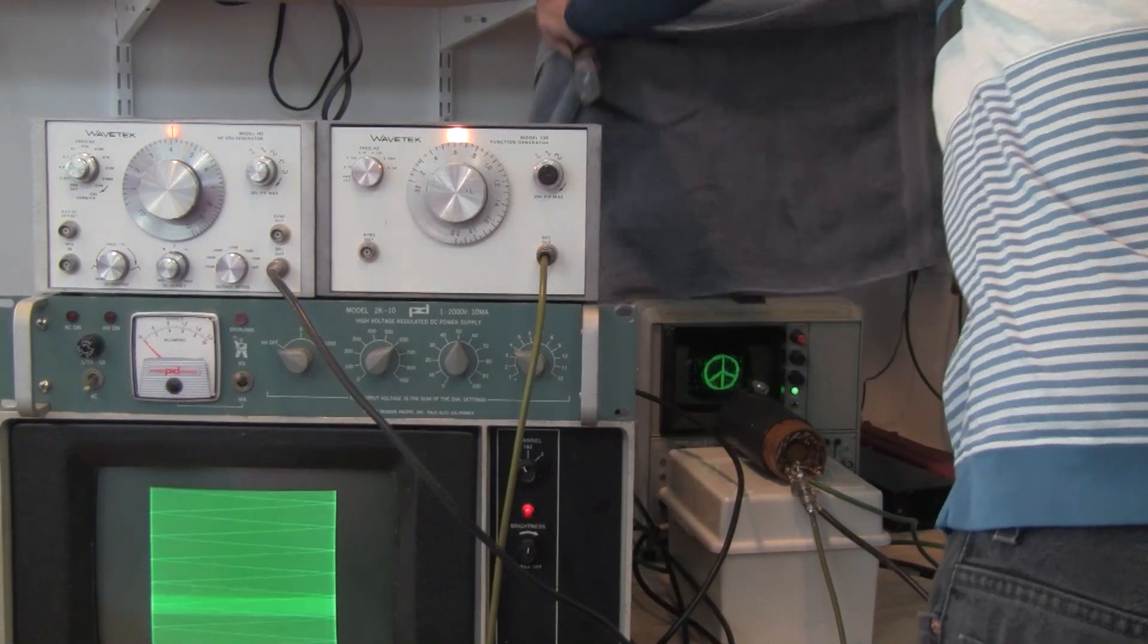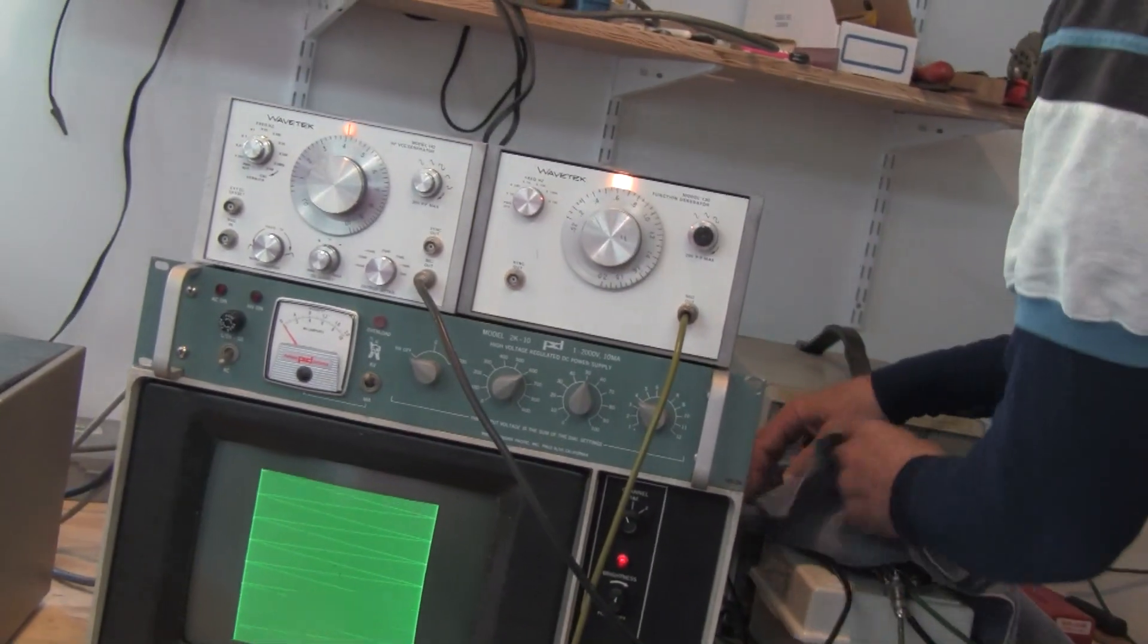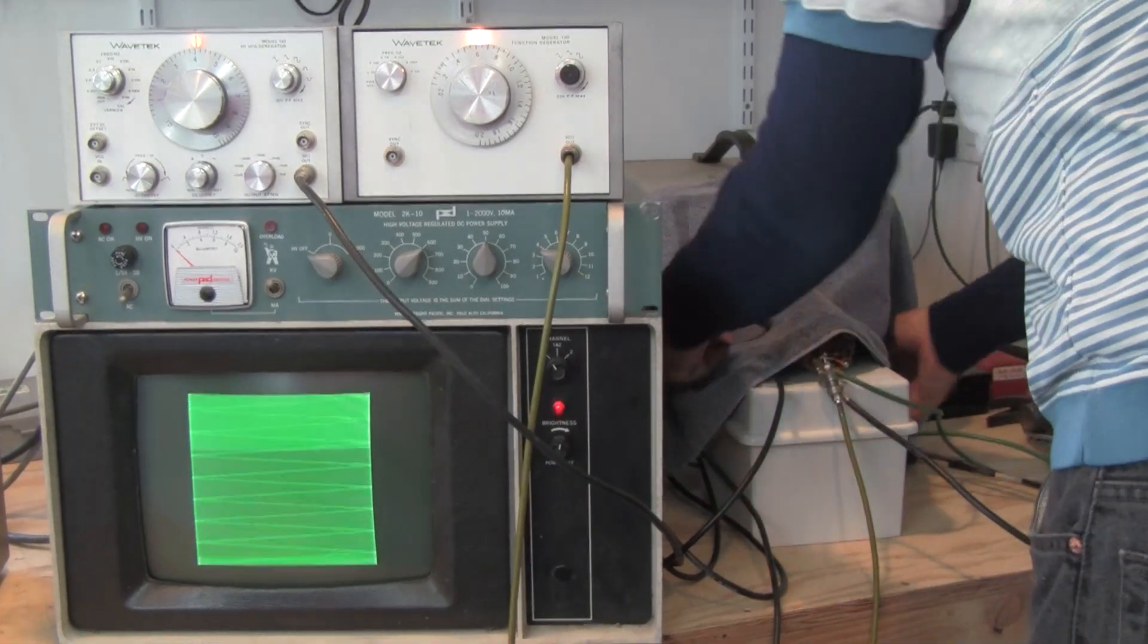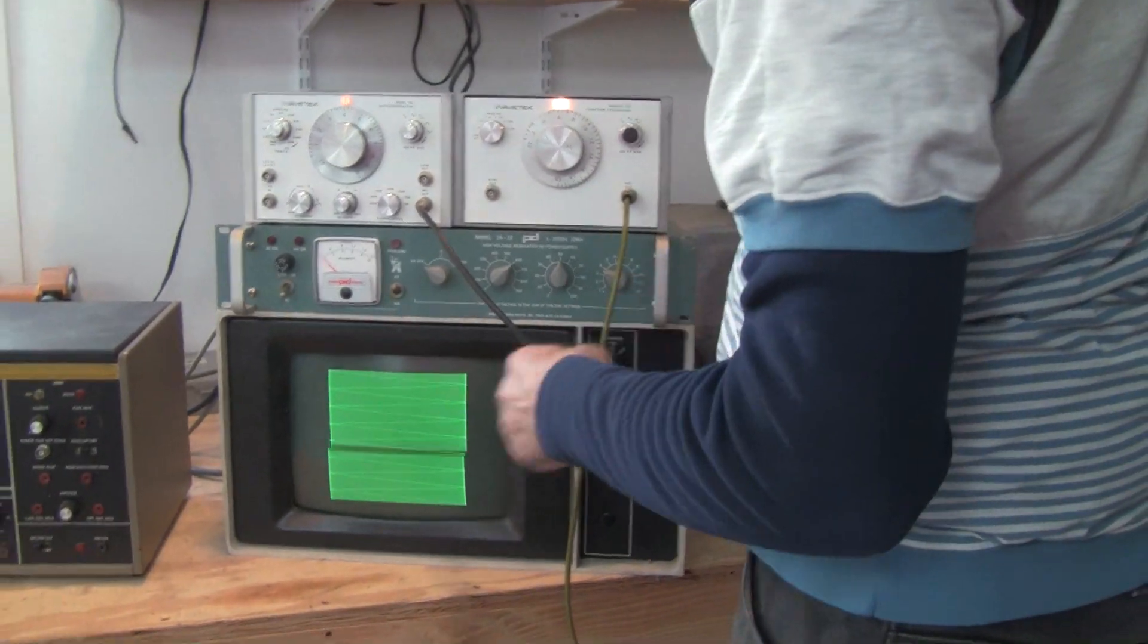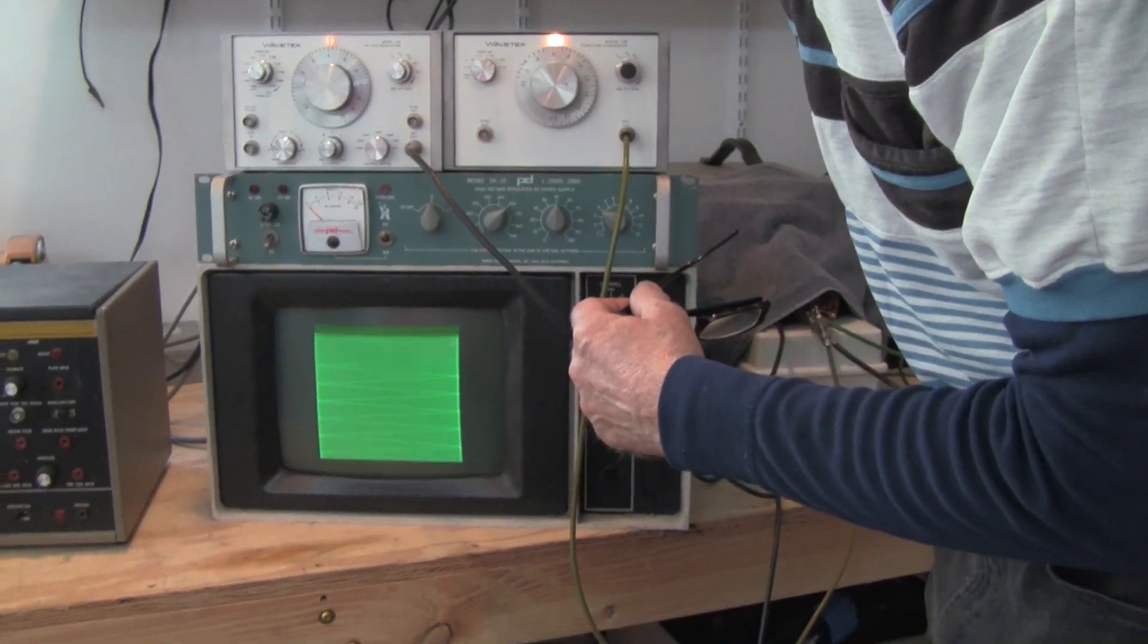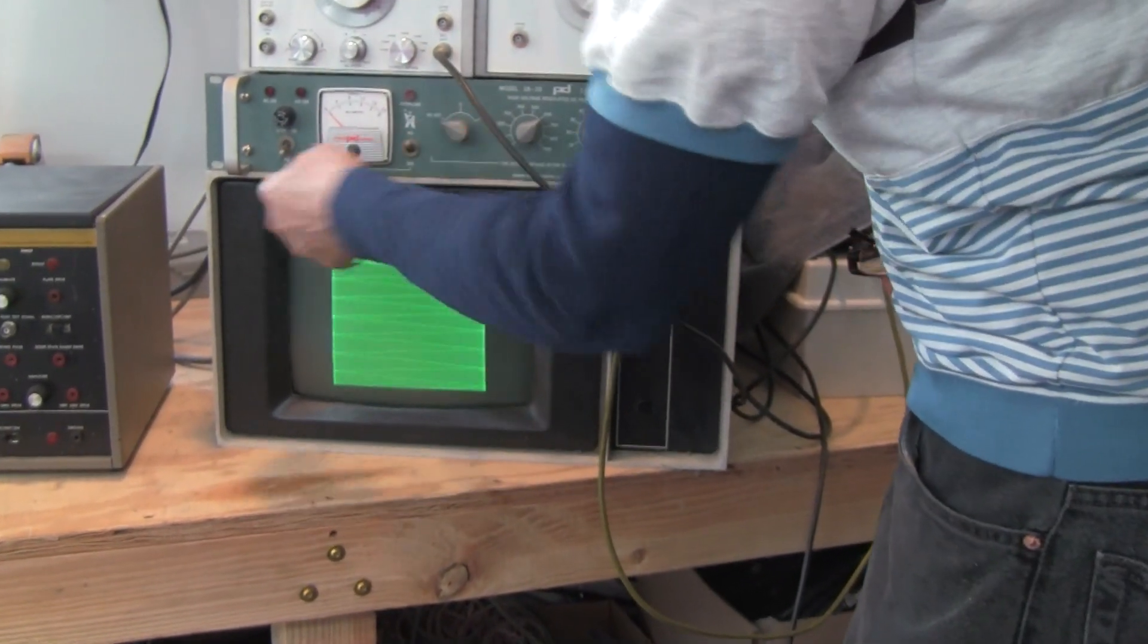So let's cover this up. It has to be a blue towel. Let's crank the phototube a little. Oh wait, first of all, it helps to turn the horizontal on.